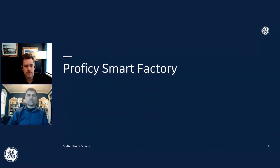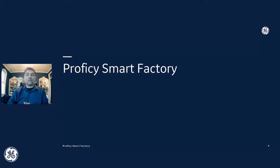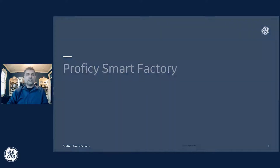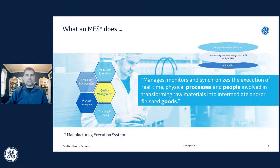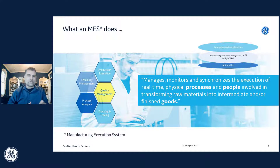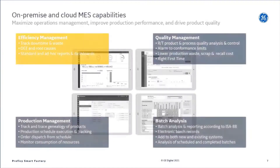Thanks, Justin. I'm really excited to talk about this — what we're calling Prophecy Smart Factory. This is not necessarily a new product, but a combination of several products we're putting together, and we're calling it Smart Factory because there's more to it than just plant applications. It's all about monitoring, managing, and helping you synchronize the execution of your products across your plant — taking that physical process, marrying it with the people, and transforming raw materials into finished goods to be more efficient, productive, and drive more throughput while reducing waste.